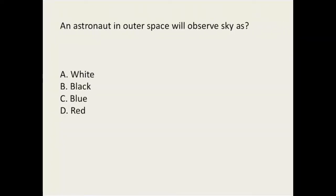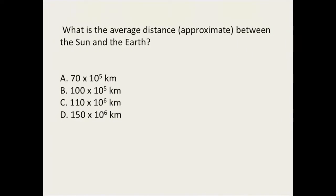An astronaut in outer space will observe the sky as black. They'll see the sky is black because we see the sky as blue due to reflections of particles in the air — white light dissects and scatters. What is the average distance between the sun and the earth? The answer is D: 150 × 10⁶ kilometers, so D is the right answer.